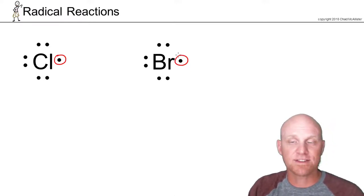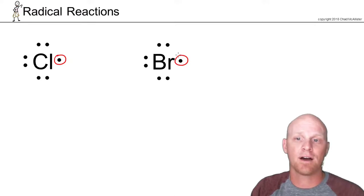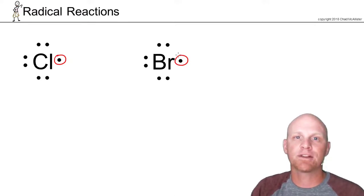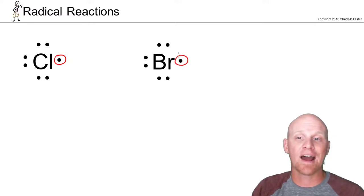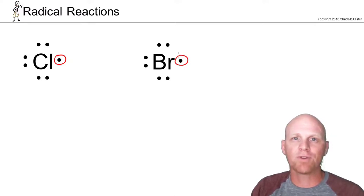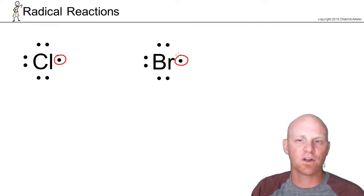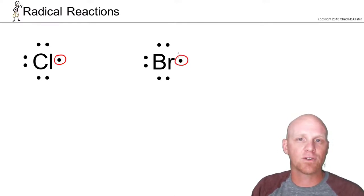These chlorine and bromine radicals don't have either a positive or negative formal charge — they're neutral species. But since they've got that unpaired electron and no filled octet, they are highly reactive species. When people talk about free radicals and how they can cause mutations and oxidative stress, it's this kind of radical they're talking about.